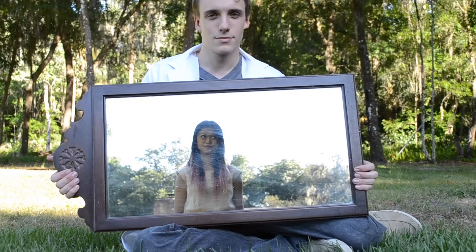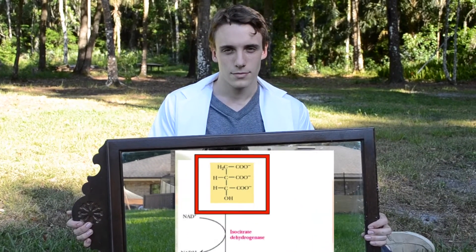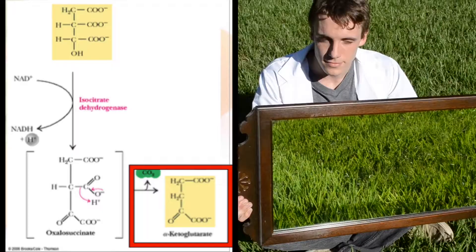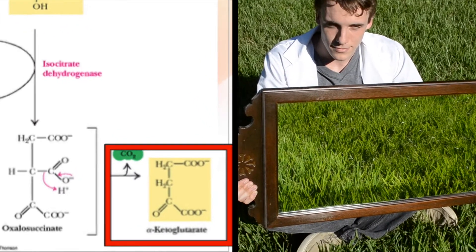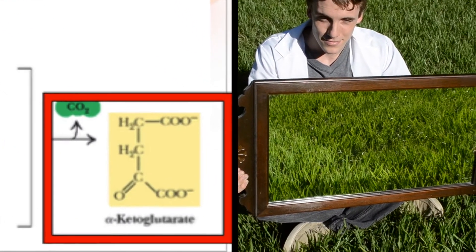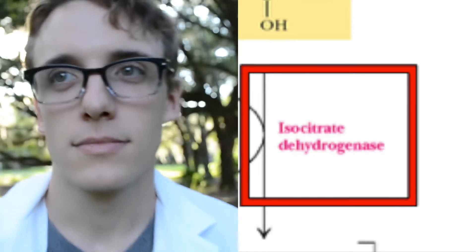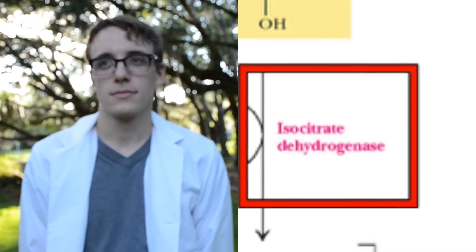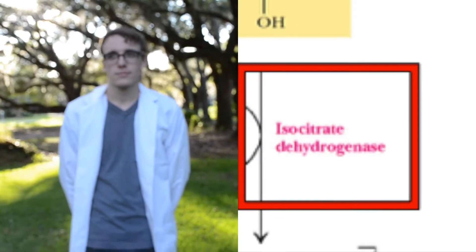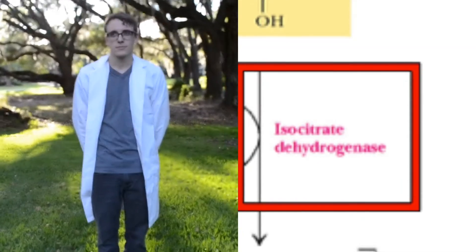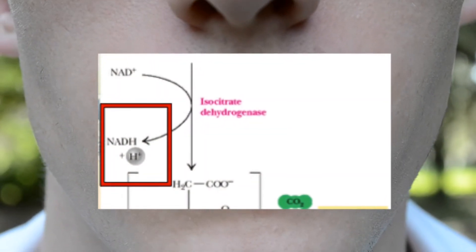In step 3, isocitrate becomes alpha-ketoglutarate, using isocitrate dehydrogenase, making NADH.